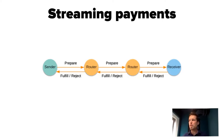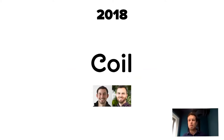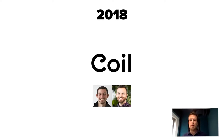This was all founded in 2016. A few years further in 2018, the two guys at Ripple were really interested in the idea of Interledger and also saw the problems with monetizing content. So they thought maybe this could solve that problem. What did they do? They started a company named Coil. Coil is a subscription service where you pay $5 per month via credit card, and they pay content creators on your behalf via the Interledger protocol.